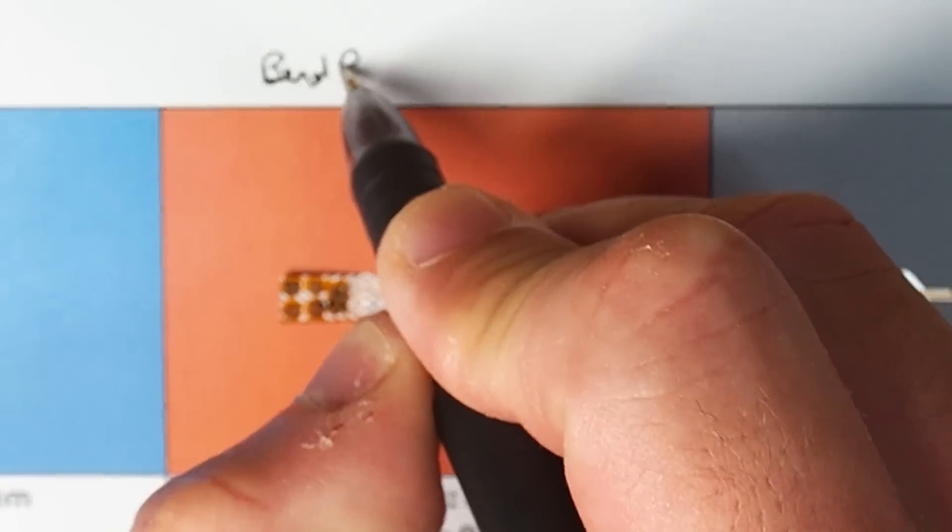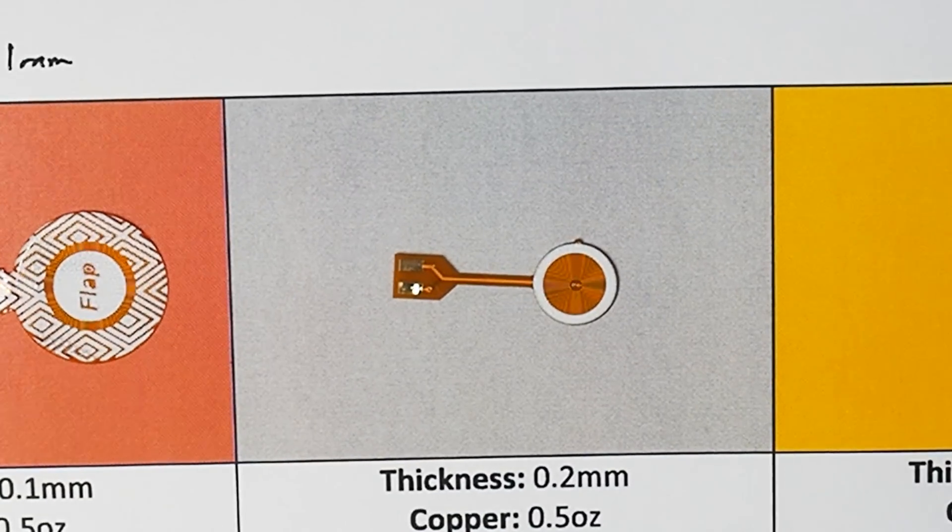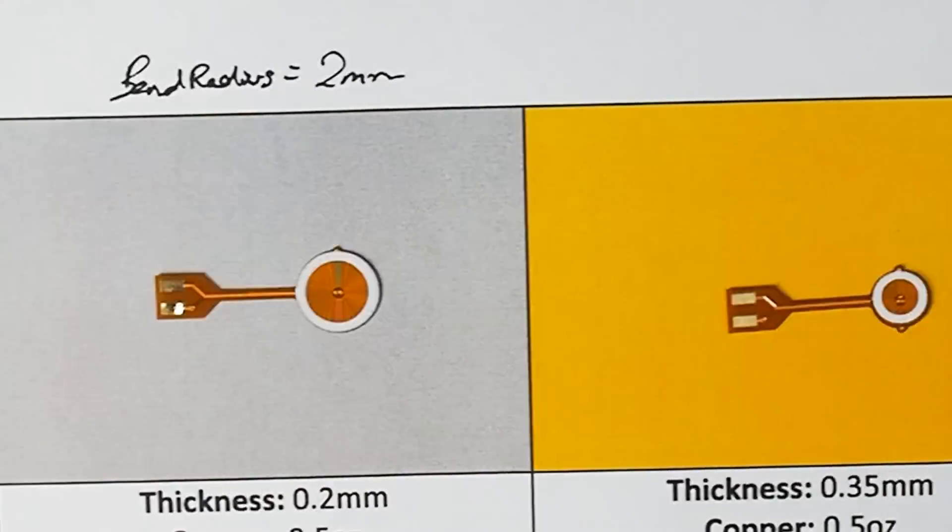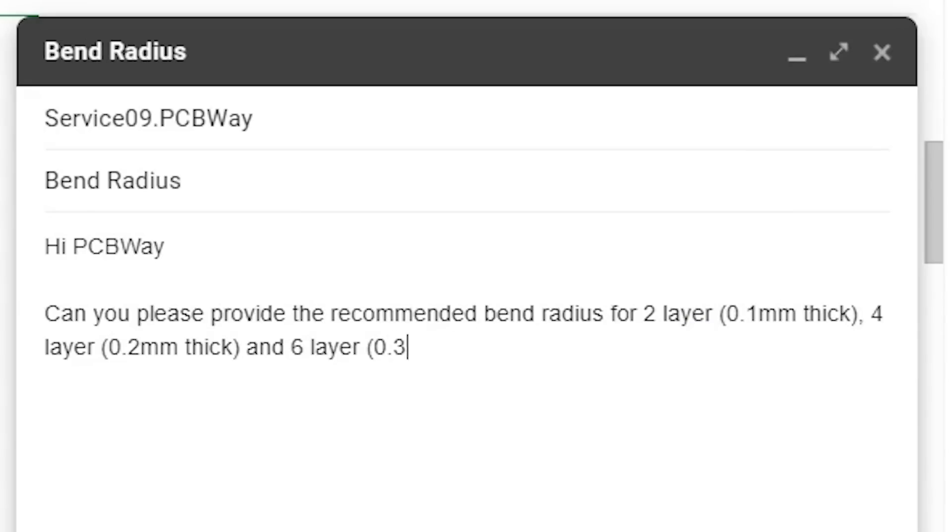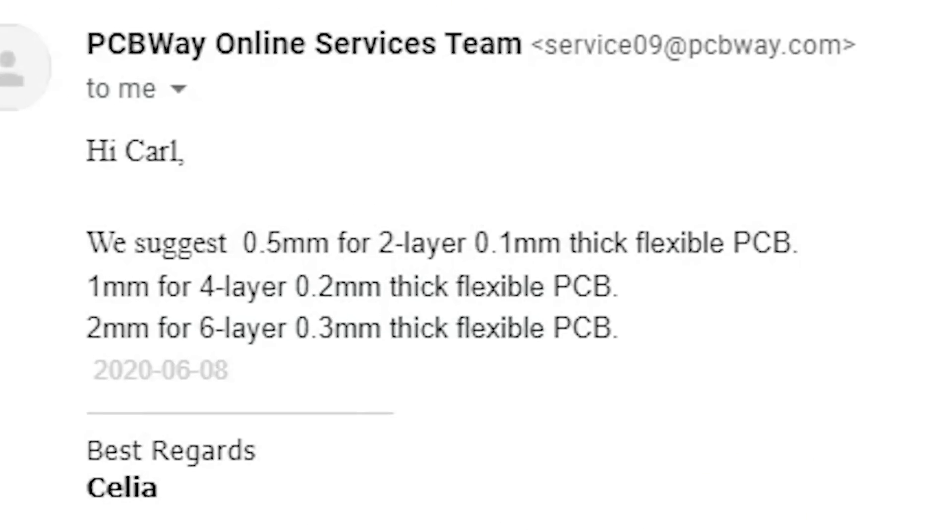So that is 1mm for the 2 layer PCB, 2mm for the 4 layer, and 3.5mm for the 6 layer. I also confirmed this with PCBWay and they gave me values that are smaller than this guideline.